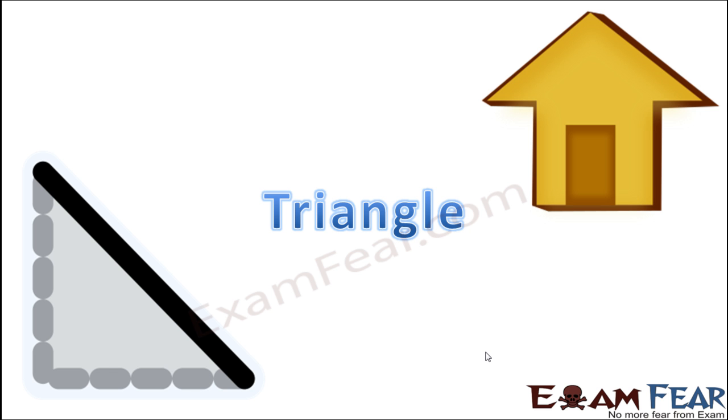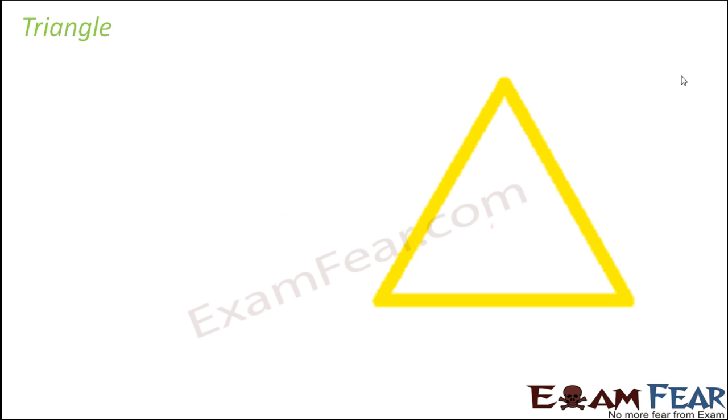Where do you see a triangle? When you were a child, you used to draw a hut. The roof of the hut is nothing but a triangle. So, triangle is a polygon with three sides.